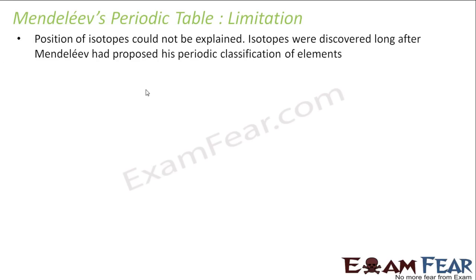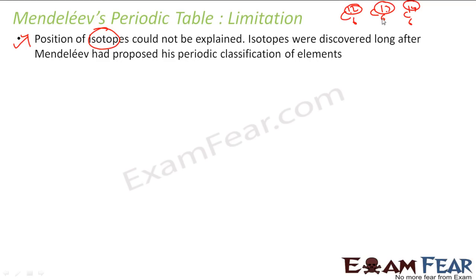Now let's see the limitations of this table. First, the isotopes were discovered around the same time as noble gases, but the position of isotopes could not be explained. Isotopes are elements with the same atomic number but different atomic mass — like carbon-12, carbon-13, and carbon-14. Since they have different atomic masses, they should be placed differently in the table, but this table allowed carbon to be placed only once. So the position of isotopes could not be explained.